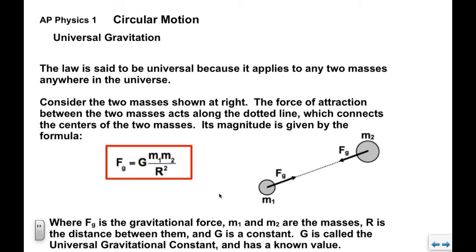Big G here is a constant. We do want to emphasize the difference between big G and little g. Little g we know is the acceleration, local acceleration due to gravity. This big G is a universal gravitational constant; it has a value that's very well known.